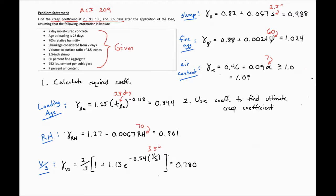So our ultimate creep coefficient, which we'll call nu sub u, is equal to 2.35 times our gamma creep.